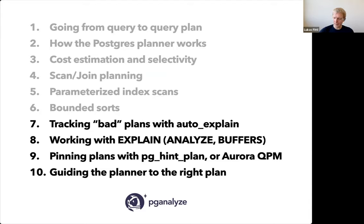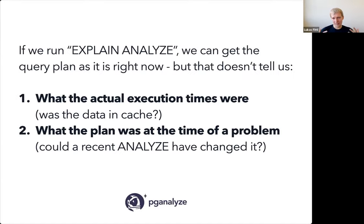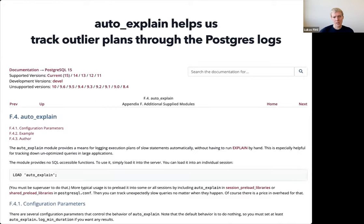Let's talk about tracking bad plans with auto_explain. This is dear to heart because we do a lot of this at pganalyze. The problem: if you run EXPLAIN ANALYZE right now and your query was slow yesterday, you might observe a very different state of the system. You might get different execution times because data might be in cache now that wasn't in cache yesterday. You might also get a different plan altogether if Postgres ran ANALYZE on the table overnight. It becomes quite challenging to really understand what happened in a slow query when you debug things after the fact. auto_explain is an amazing extension — I use it on basically any production database — and it helps us track outlier plans by logging them to the Postgres log.